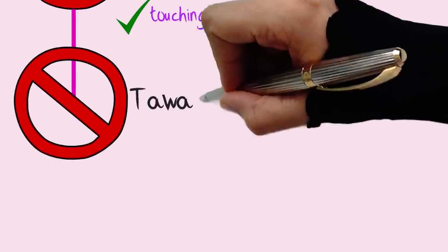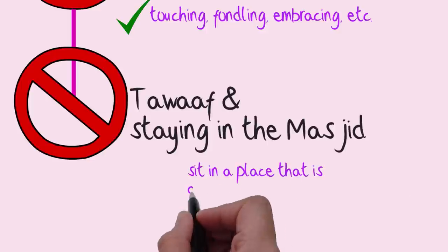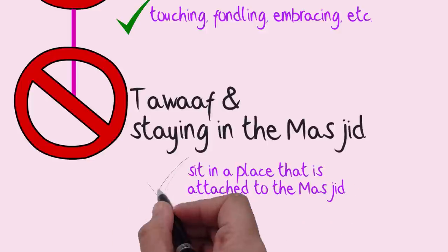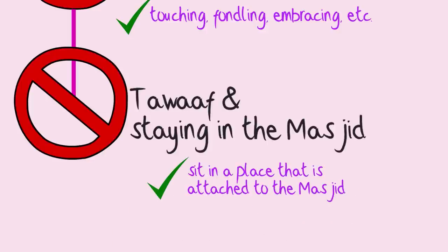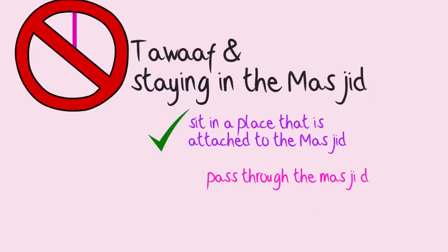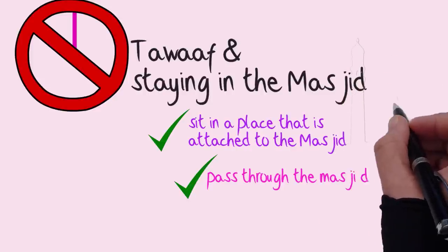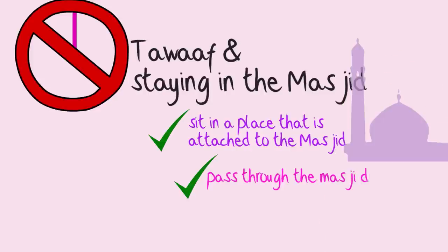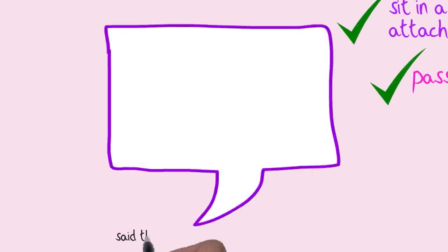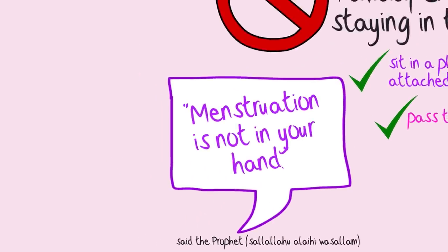What you should also avoid is tawaf and staying in the masjid, but you can sit in a place that is attached to the masjid. There's nothing wrong with that. If there is a need you may pass through, like going from door to door or collecting something from the masjid. Once Allah's messenger asked Aisha to fetch him a prayer mat from the masjid. She hesitated because of the monthly cycle.